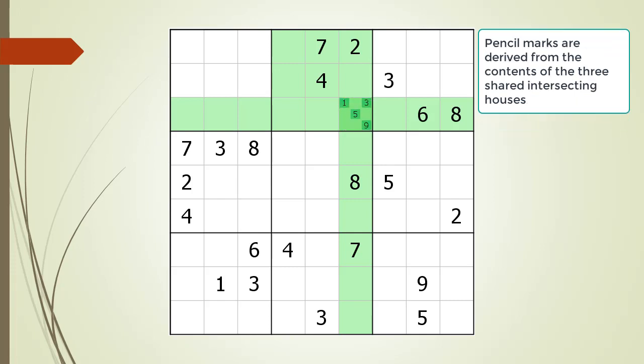Here are the pencil marks we can put into cell 3,6. Usually, pencil marks are shown with a smaller font than the one used for givens and values. The reason we put the numbers 1, 3, 5, and 9 as pencil marks is because those numbers do not already exist in the three shared houses. In the house making up row 3, there is a 6 and an 8, meaning there cannot be a 6 or 8 in cell 3,6.